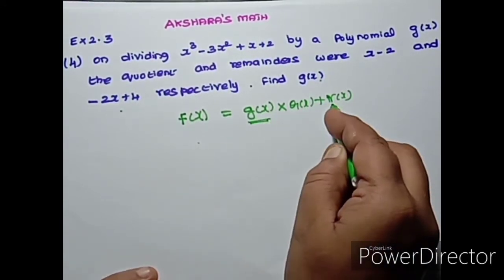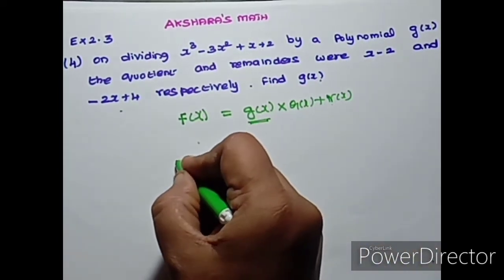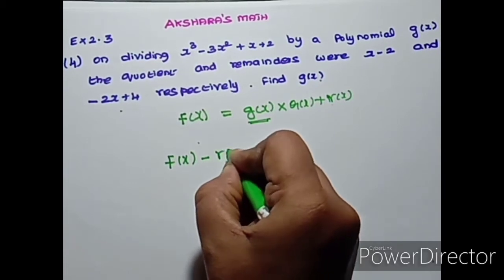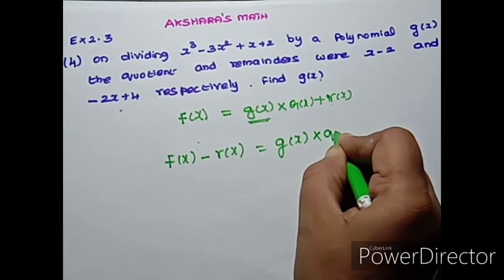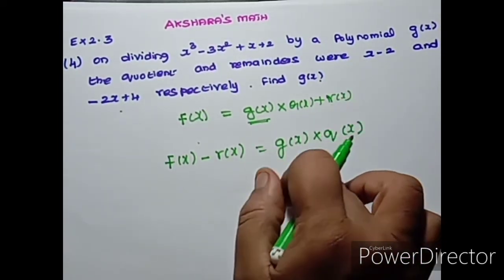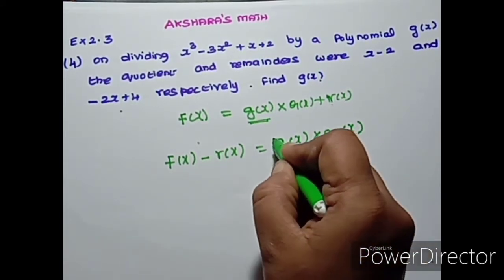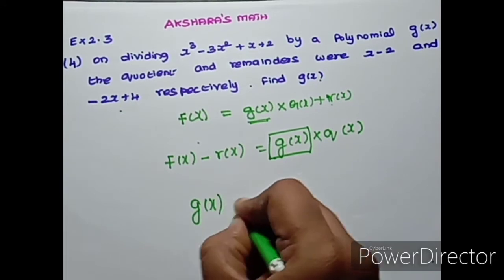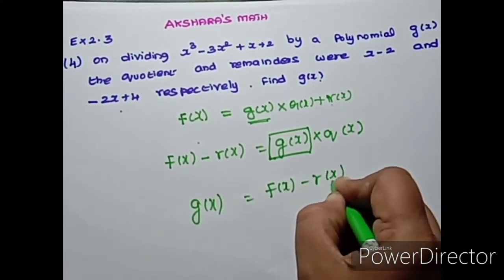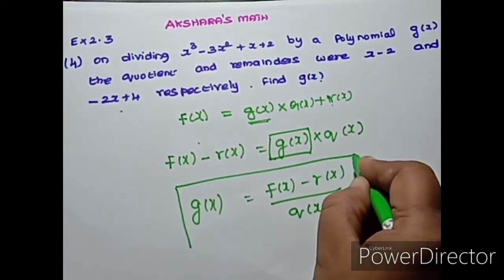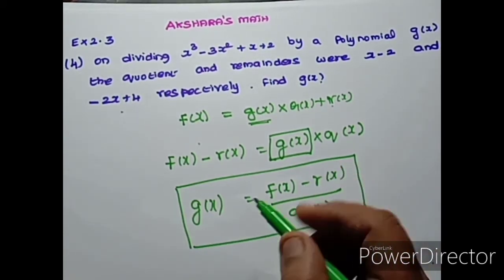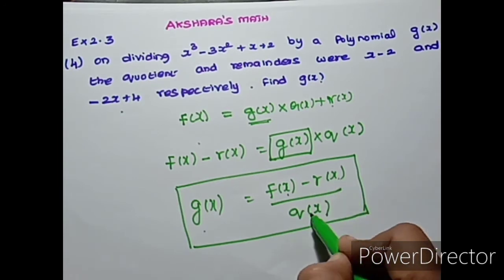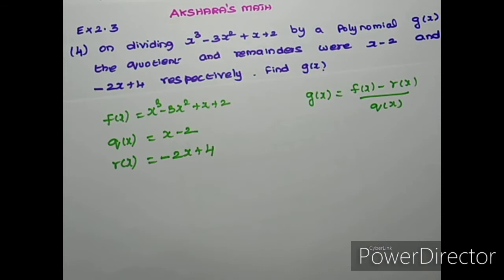From the division algorithm, f of x minus r of x is equal to g of x into q of x. Therefore, g of x is equal to f of x minus r of x divided by q of x.